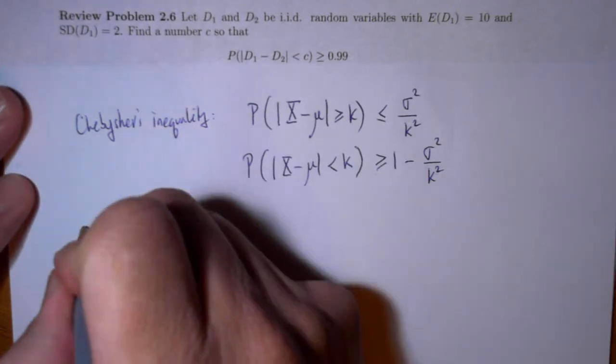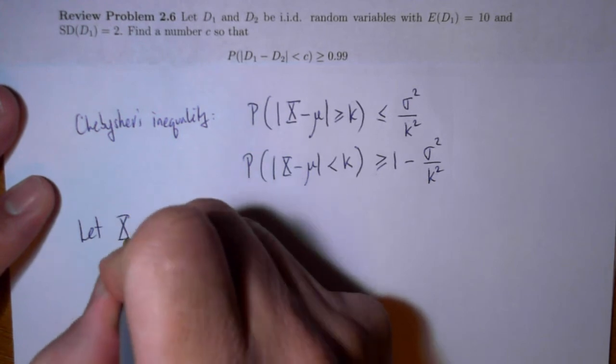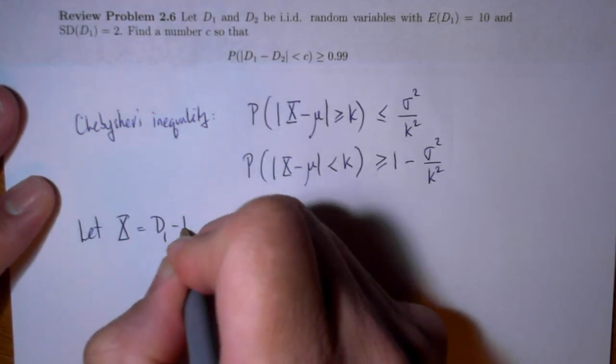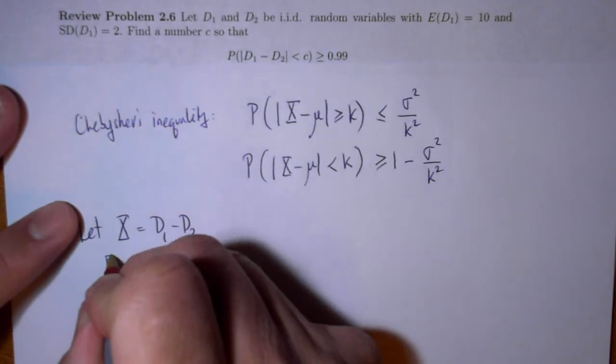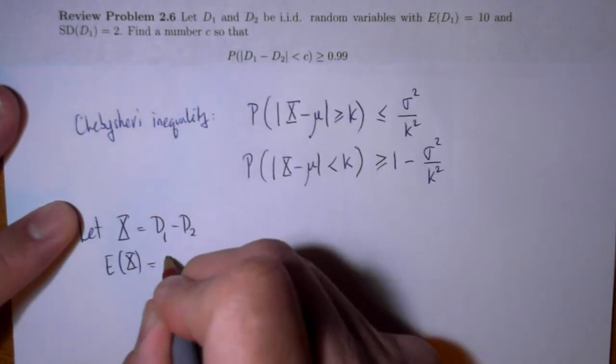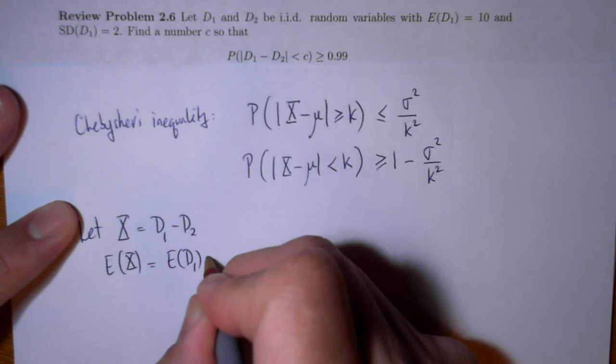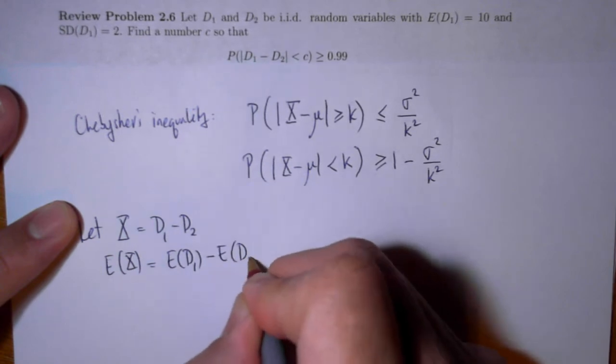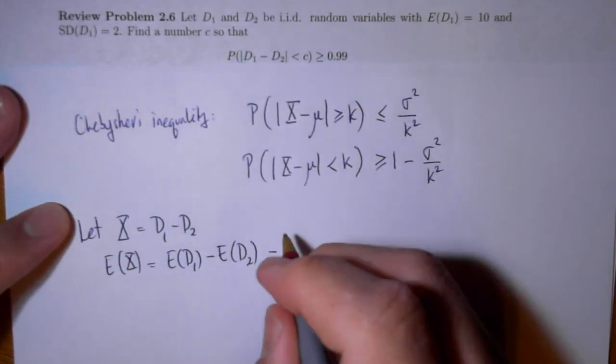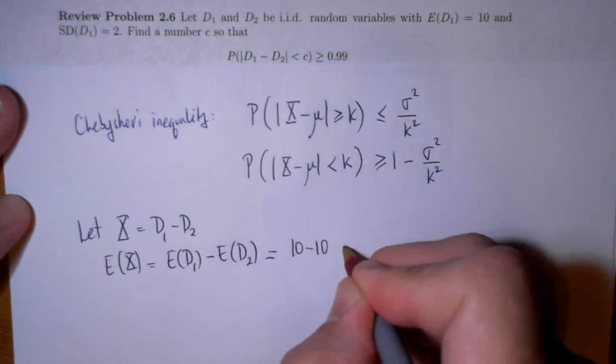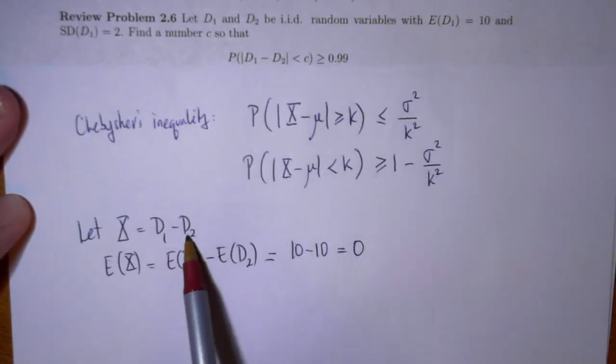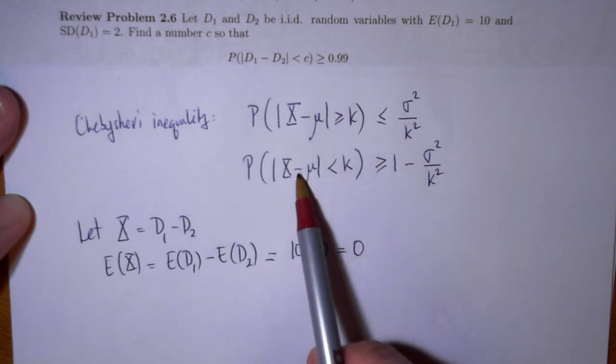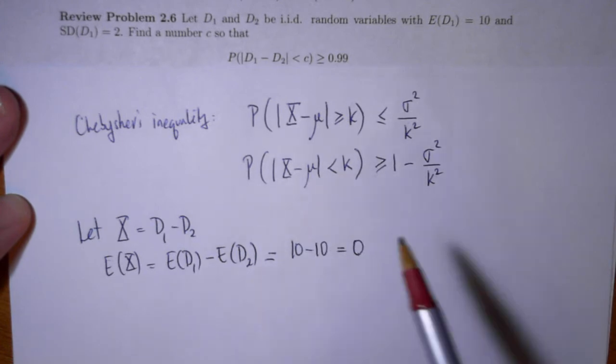Okay, now how does this get used? So let x be equal to D1 minus D2. So that's going to be my x. Then the expected value of x is the expected value of D1 minus the expected value of D2. And that's going to be 10 minus 10 and that's 0. So x is going to be D1 minus D2 and I will subtract 0, minus 0.